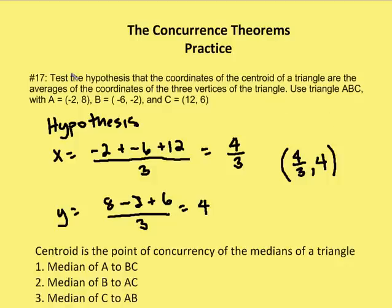Moving on to our third and last question. We want to test the hypothesis that the coordinates of the centroid of a triangle are the averages of the coordinates of the three vertices. We're going to use triangle ABC with A = (-2, 8), B = (-6, -2), and C = (12, 6) to verify the hypothesis and then work it out in practice by finding two of the three medians of the triangle.